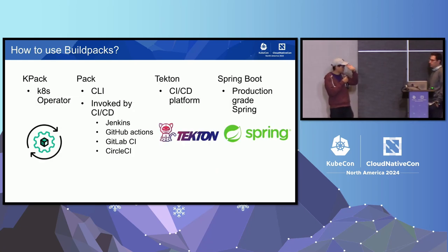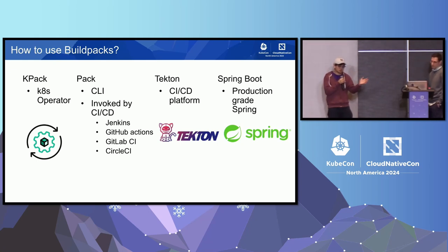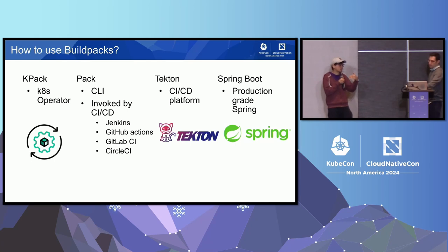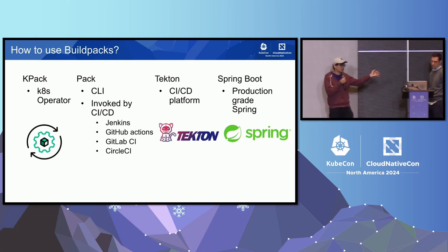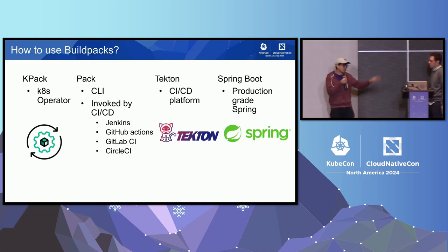In addition to Pack as a local CLI platform, which is probably the easiest way to get started, a lot of companies just use it in their CI/CD system directly as part of the CI pipeline. You can use it inside Jenkins, and we provide GitHub Actions as well as CircleCI. As part of the project there's also KPAC, which is a Kubernetes operator, a Tekton template, and as part of the Spring Boot project you can just use Maven and get a running containerized image.